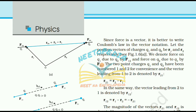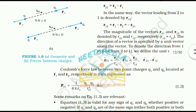The constant k is usually written as k = 1/(4πε₀), so Coulomb's law is written as F = (1/4πε₀)·q1·q2/r², where ε₀ is called the permittivity of free space. The value of ε₀ in SI units is ε₀ = 8.854 × 10⁻¹² C²/(N·m²). Since force is a vector, it is better to write Coulomb's law in vector notation. Let the position vectors of charges q1 and q2 be r1 and r2 respectively. The force on q2 due to q1 is denoted by F₂₁, and the vector leading from 1 to 2 is r₂₁ = r2 − r1.